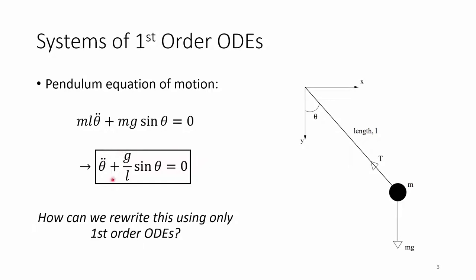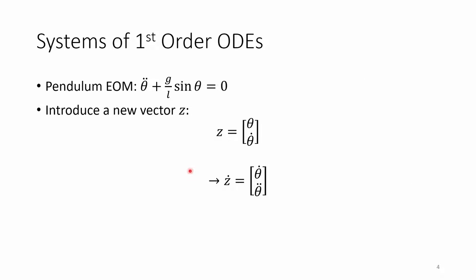The question is, how do we rewrite this using just first derivatives? I'll leave the pendulum EOM at the top. Let's introduce Z. Z has theta in the first row, and theta dot in the second row. We're just changing the notation to let Z have two components.